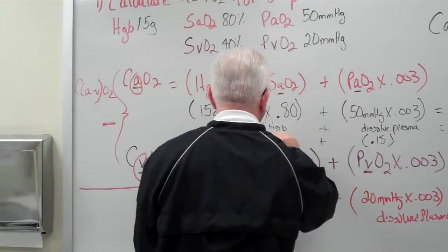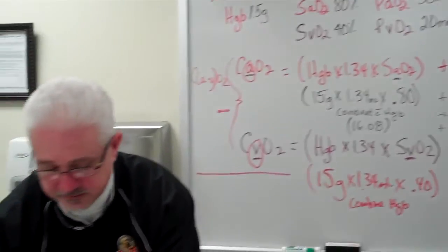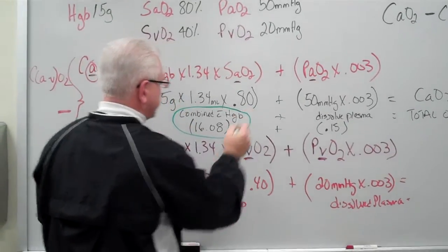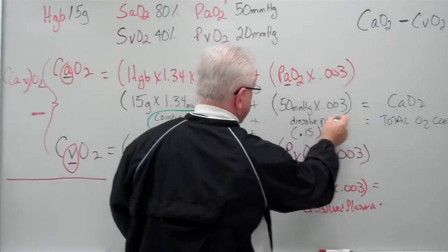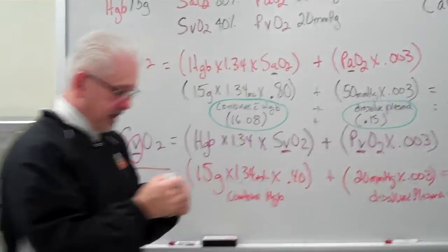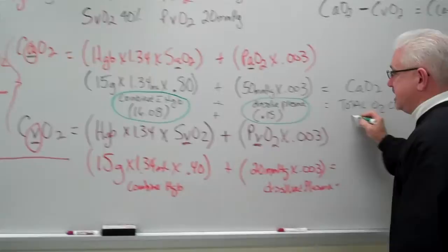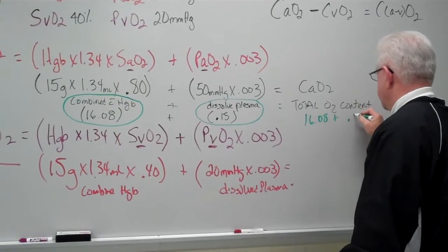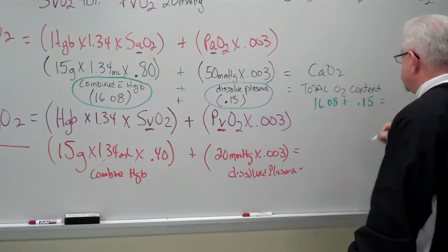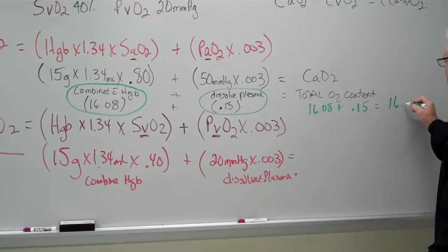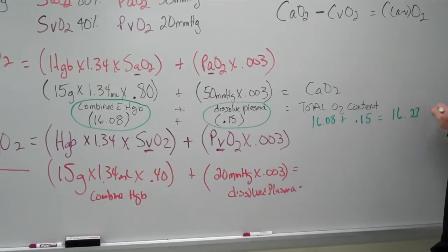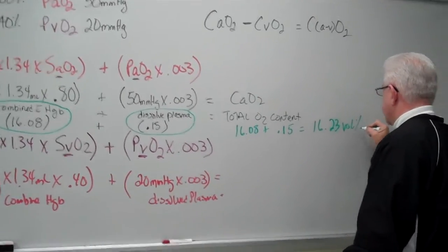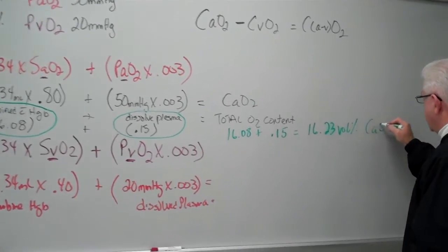So now, I am going to circle this in green because these are the two parts that you're going to add together. You're going to add this part, which is combined with the hemoglobin, and then you're going to add this part, which was dissolved in the plasma. And when I do that, that's 16.08 plus 0.15. When I add the two together, it is 16.23 vols percent. That is my CaO2.